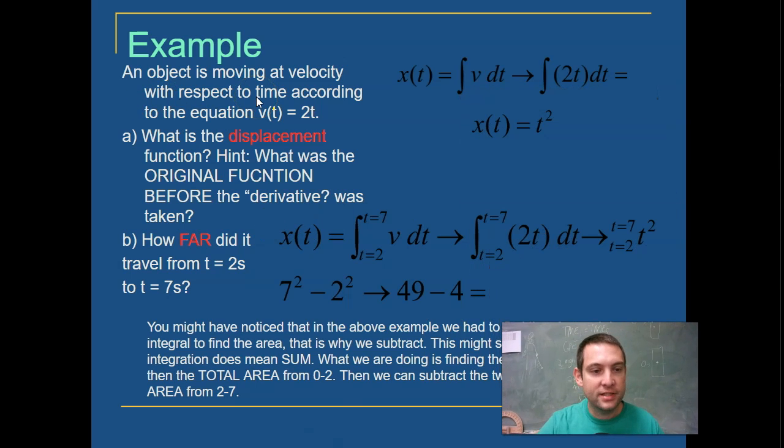An object is moving at velocity with respect to time according to the equation v(t) equals 2t. What is the displacement function? Hint, what was the original function before the derivative was taken? So if we look at the function here, we have x as a function of t equals the integral of velocity, right?